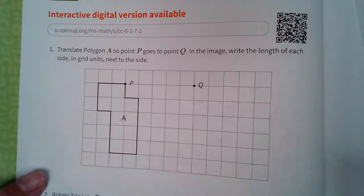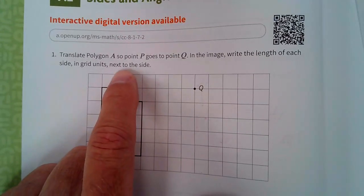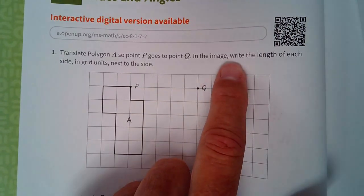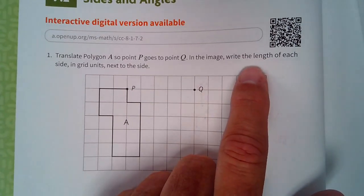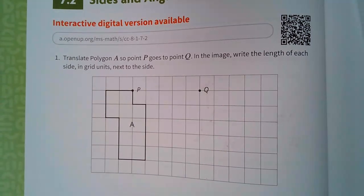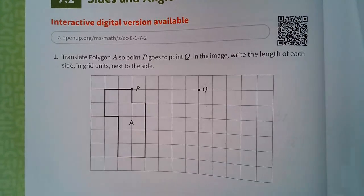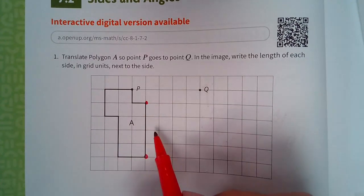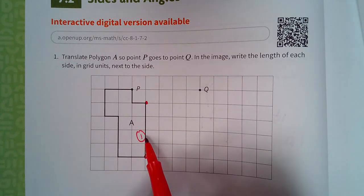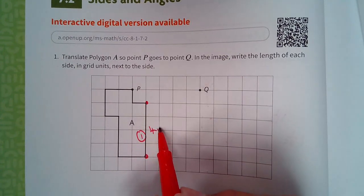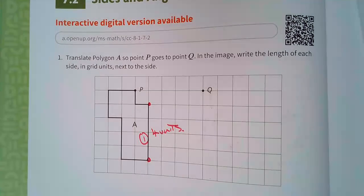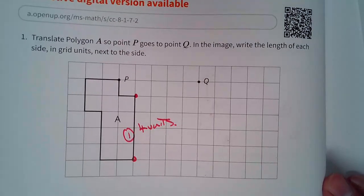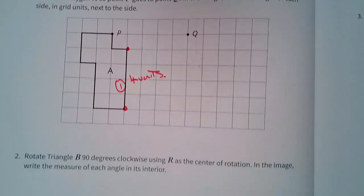All right. Translate sides and angles. It says, translate polygon A so that point P goes to point Q. So we would just be sliding it over. In the image, so that's going to be the new image, write the length of each side in the grids next to this side. Well, so when they're asking you, if I ask you to give me the length of this side right here, from here to here, I'll just call it side 1, for example. It's 1, 2, 3, 4. This would be 4 units.